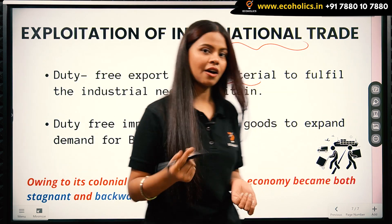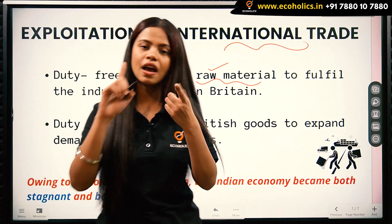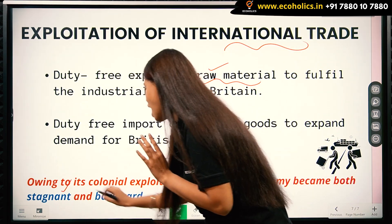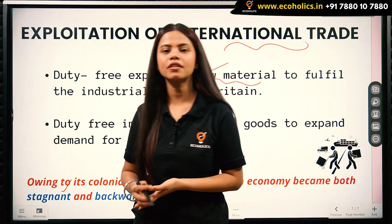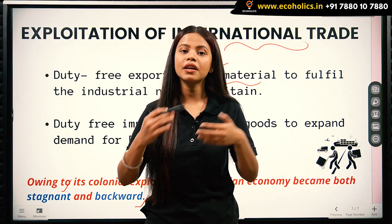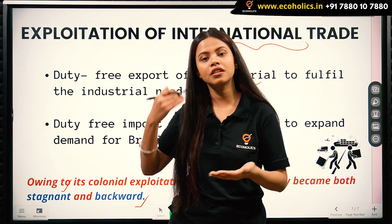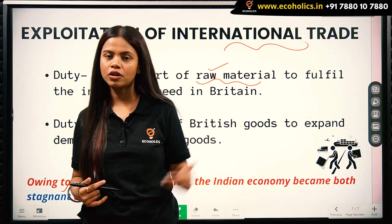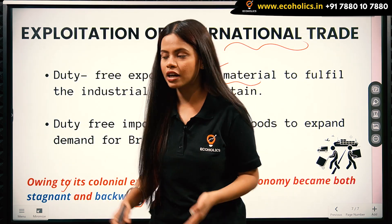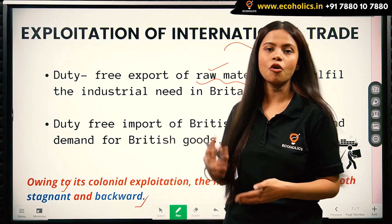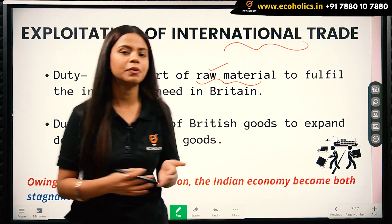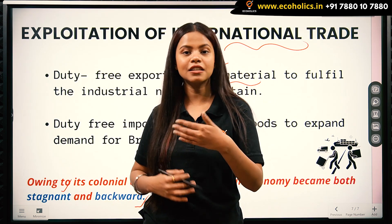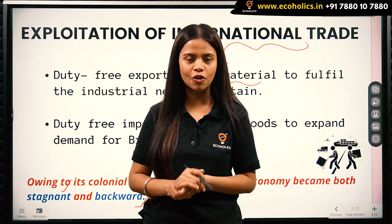All this exploitation of the three sectors — agricultural, industrial, and trade — led to the stagnation and backwardness of the Indian economy. The industrial sector was destroyed by heavy export duties and duty-free imports of foreign goods. International trade was similarly destroyed by duty-free export of raw materials and duty-free import of British goods. I'll see you in the next class. If you like this video, please share and subscribe to our channel, Ecoholics. Thank you.